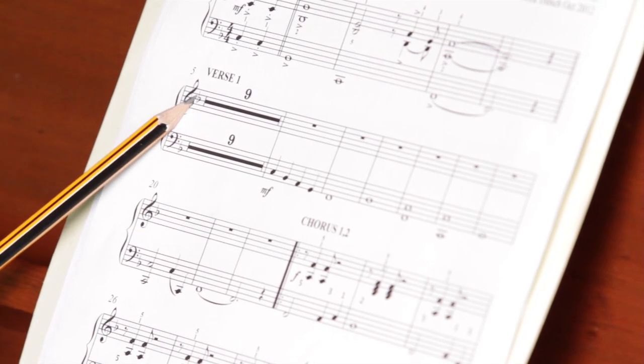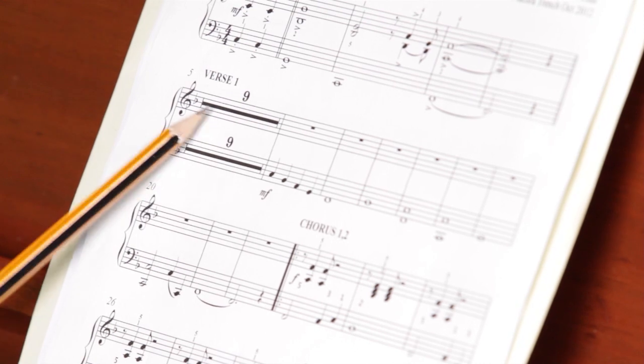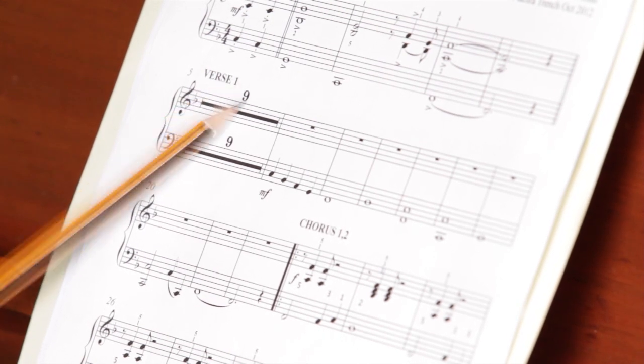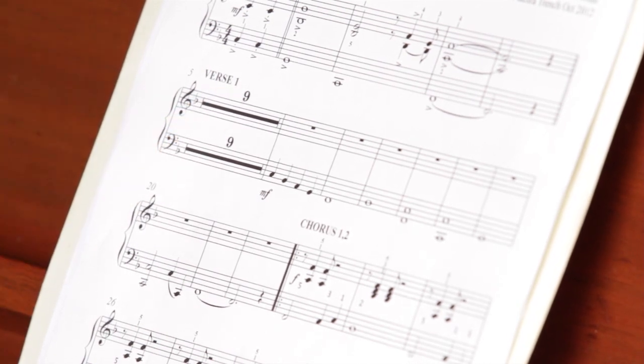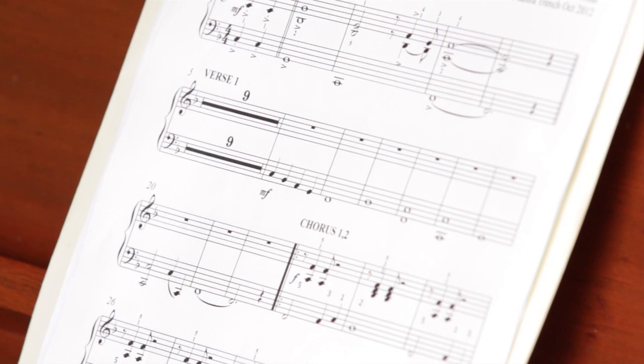And what that means is when you have the empty bar, the thick black line, and the number nine, it means you're not doing anything for nine bars. That's nine bars rest, so you just count your way through that.